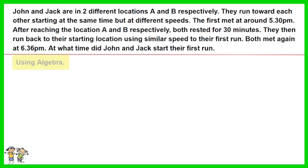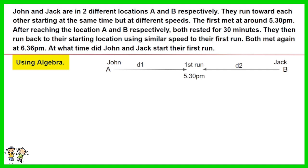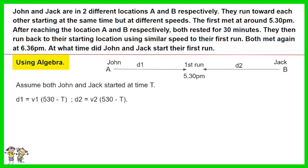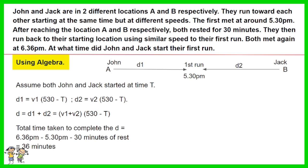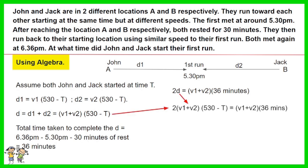Let's also solve it using algebra. Assume both John and Jack started at time t. D1 equals V1 times (5:30 minus t), and D2 equals V2 times (5:30 minus t). D equals D1 plus D2, which equals the combined speed of V1 and V2 times (5:30 minus t). Total time taken to complete the full distance D twice is 6:36 p.m. minus 5:30 p.m. minus 30 minutes of rest, which is 36 minutes. 2D equals the combined speed of John and Jack times 36 minutes. Substituting D with the expression in V1 and V2 and solving the equation, you find T is 5:12 p.m.